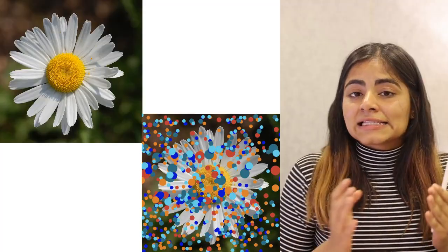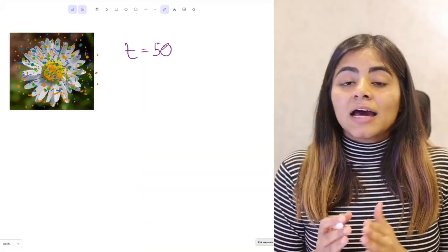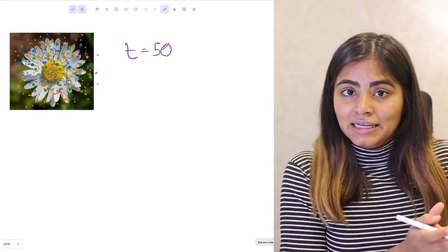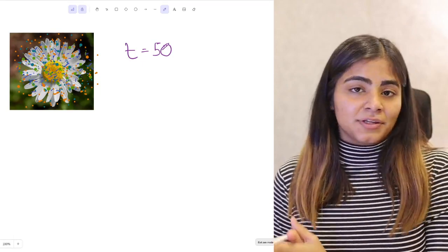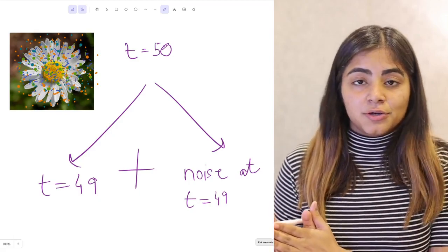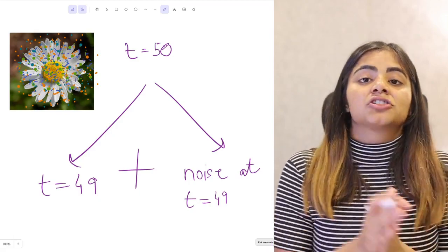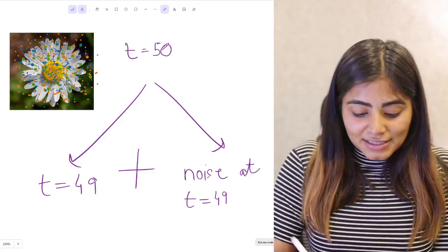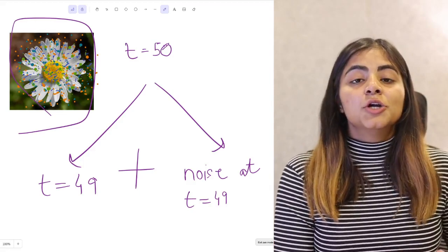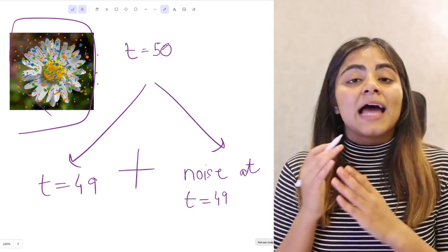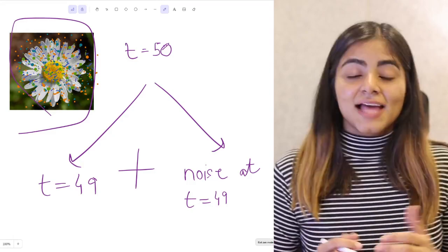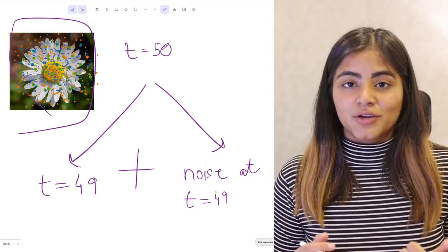So let's say at a certain time t equals to 50, our image is the combination of the image at t equals to 49 and the noise that was added in the previous step. Now in the reverse process, we provide our model with the noisy image and the time step at which that noisy image is at. So for example, this image over here is at time step t equals to 50, and now my model is going to learn to predict the amount of noise that has been added to this image by predicting the distribution of the previous step and then reconstructing the image by removing noise.